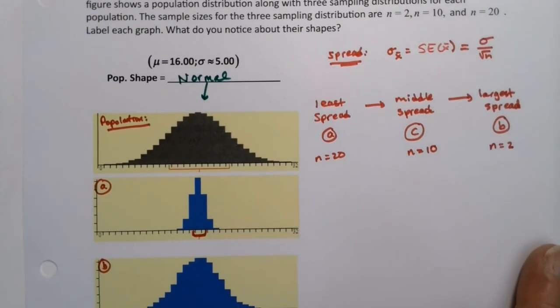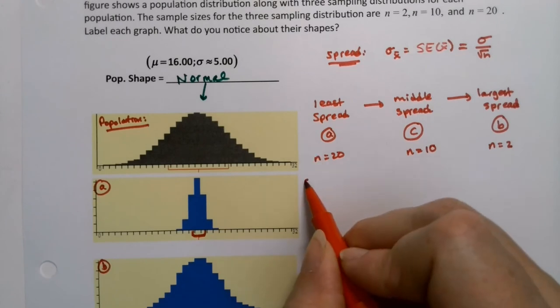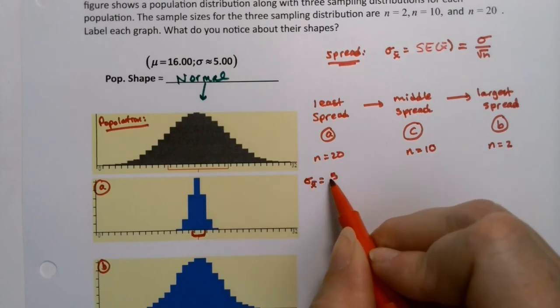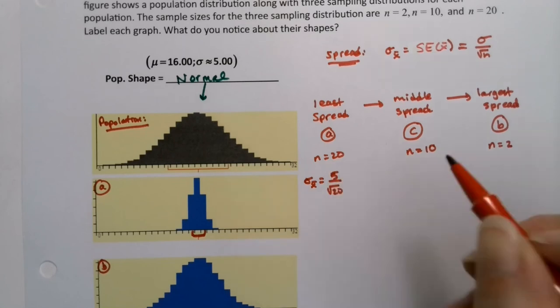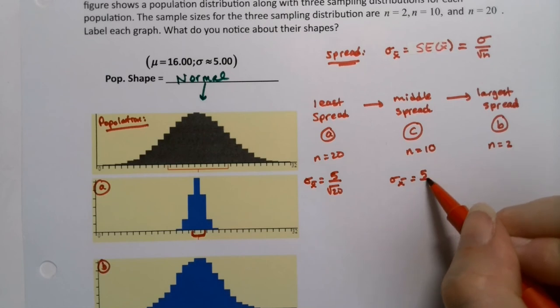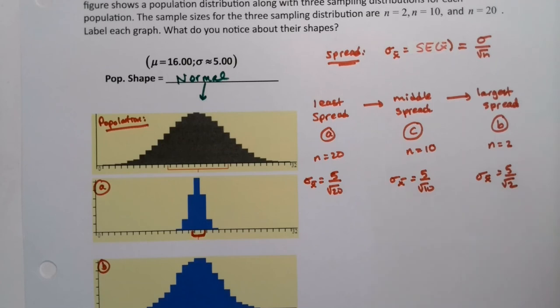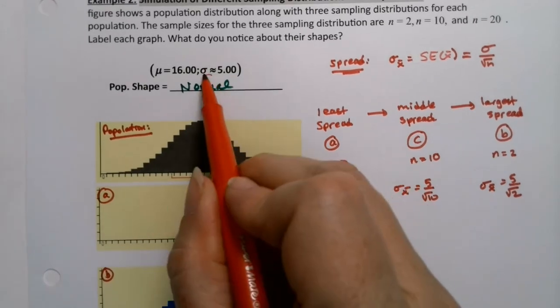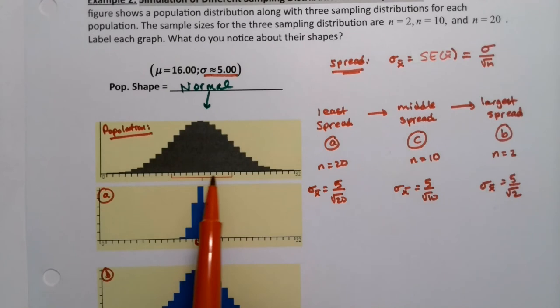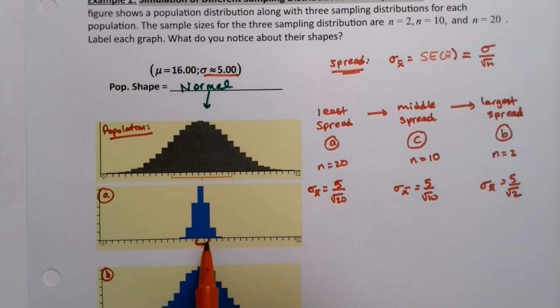This is going to be the one with n equals 20 over here, and n equals 10, which we could guess was going to be in the middle. If we were asked to find that spread, we could actually do it, because this would be, if we wanted to know sigma sub x bar, this would be 5 over the square root of 20. This would be 5 over the square root of 10. And this would be 5 over the square root of 2. Now where am I getting the 5 from? Because it told me at the start that sigma was 5. So this particular graph has a give or take of 5, right? You can see those are 5 away from that middle line, whereas this one is very small.